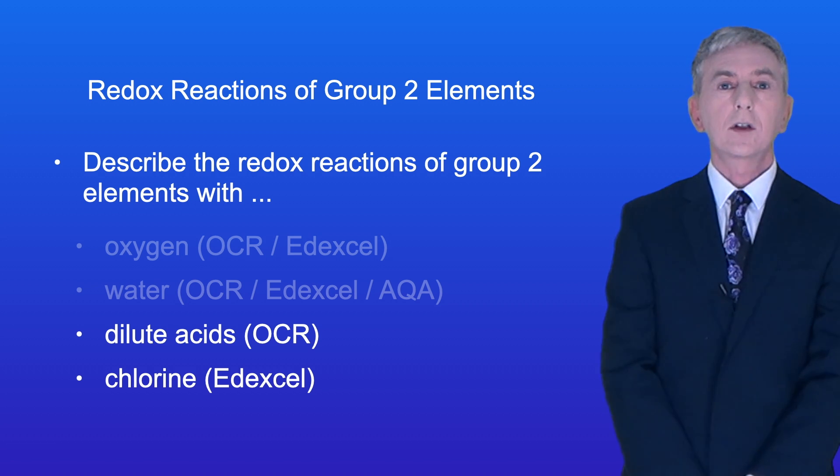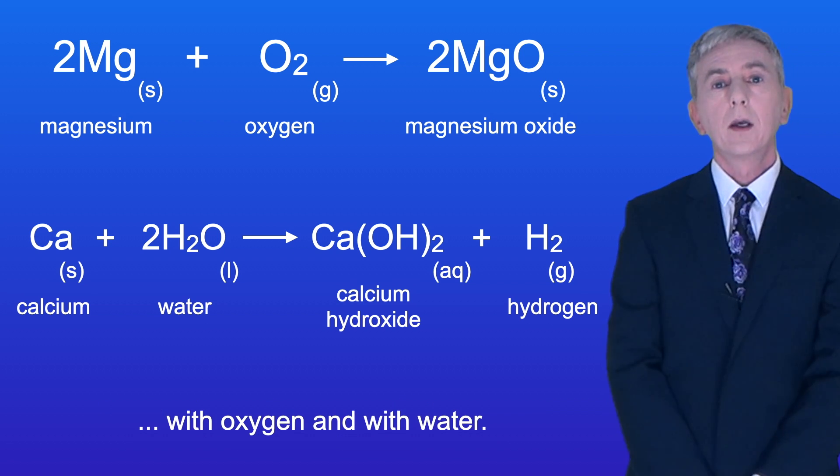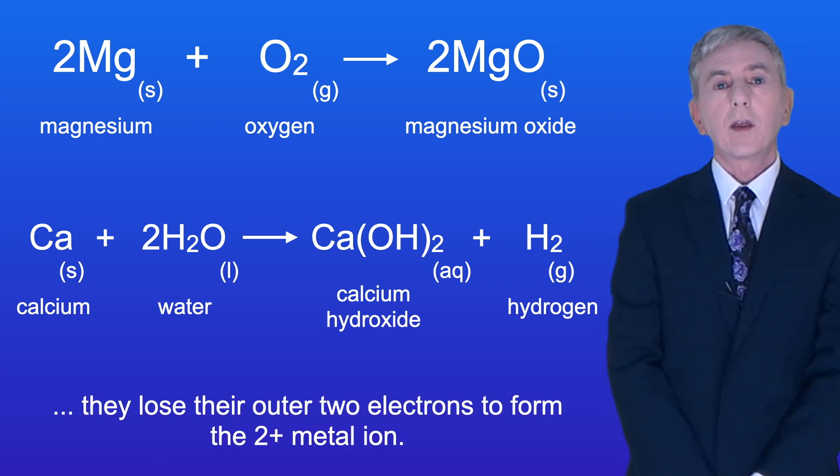This is the second part of a two-part video. In the last video we looked at the redox reactions of group 2 elements with oxygen and with water. When group 2 elements react they lose their outer two electrons to form the two positive metal ion.